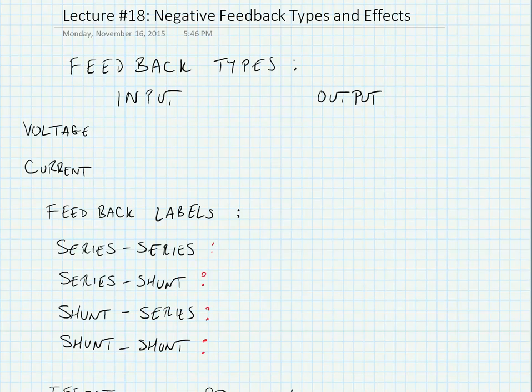In this video we're going to start talking about different types of feedback and the different types of amplifiers that we can form when we use feedback. Feedback is generally categorized by the connection at the input and the output, and we use different connections for different types of signals. For instance, we might have a voltage signal or a current signal at either the input or the output.